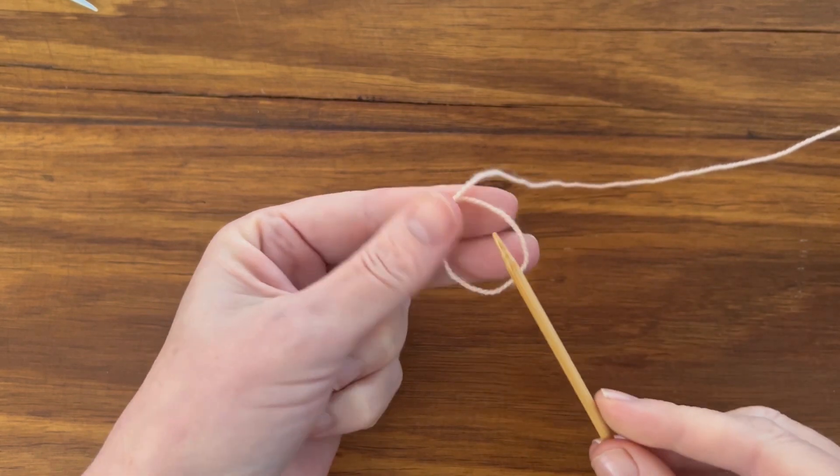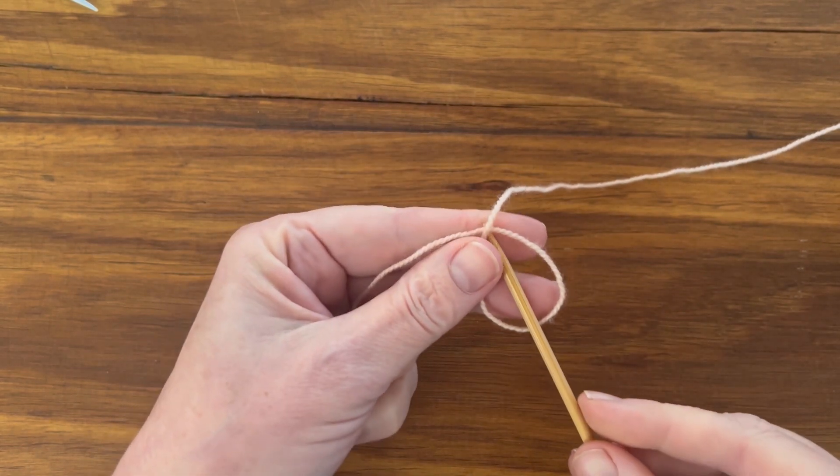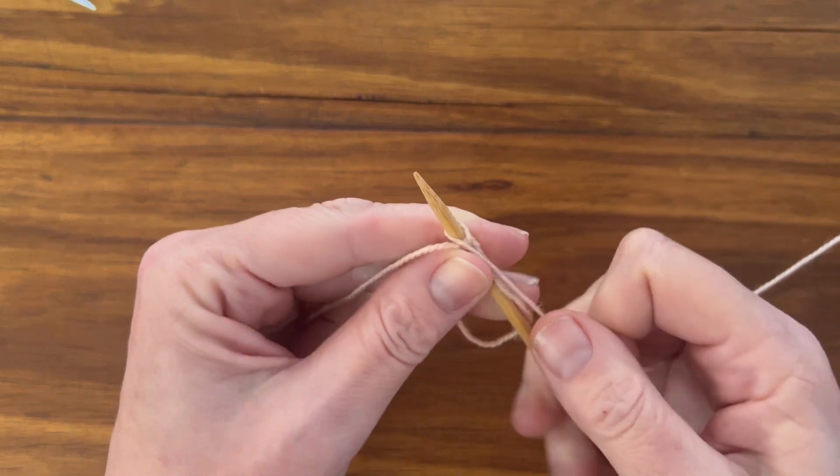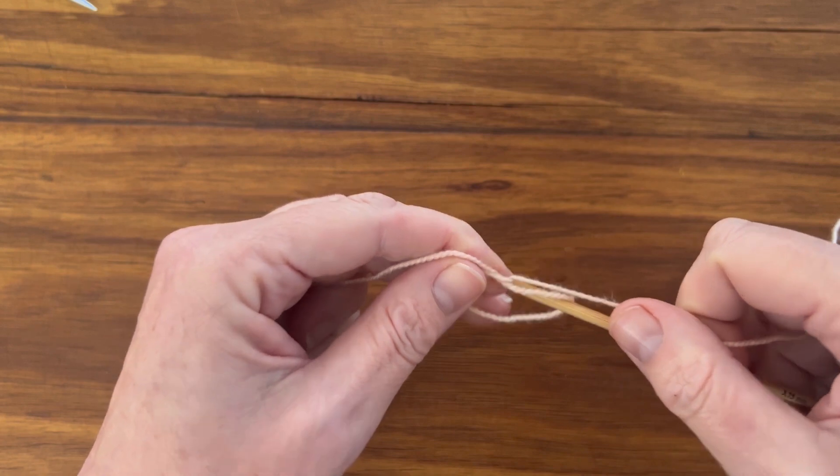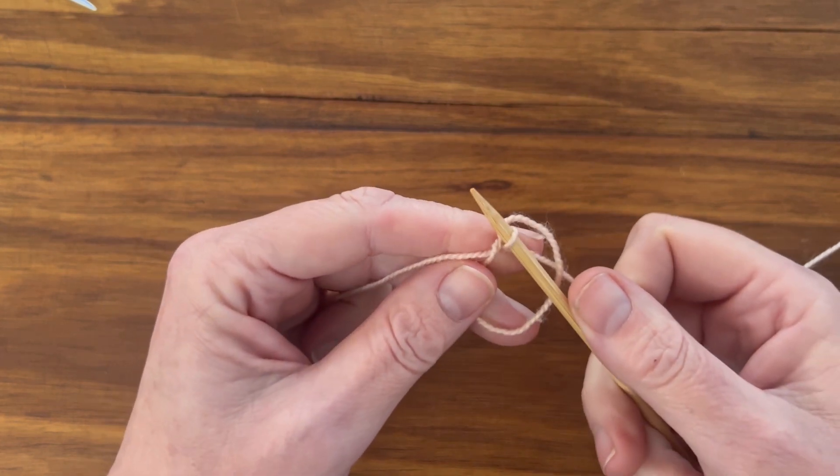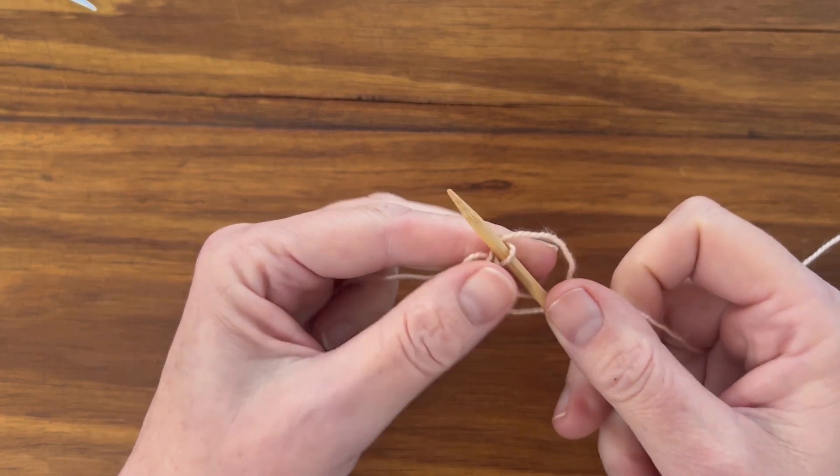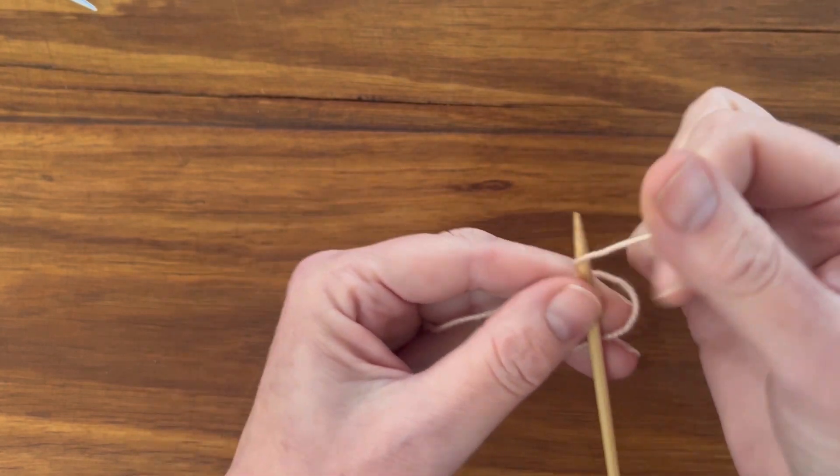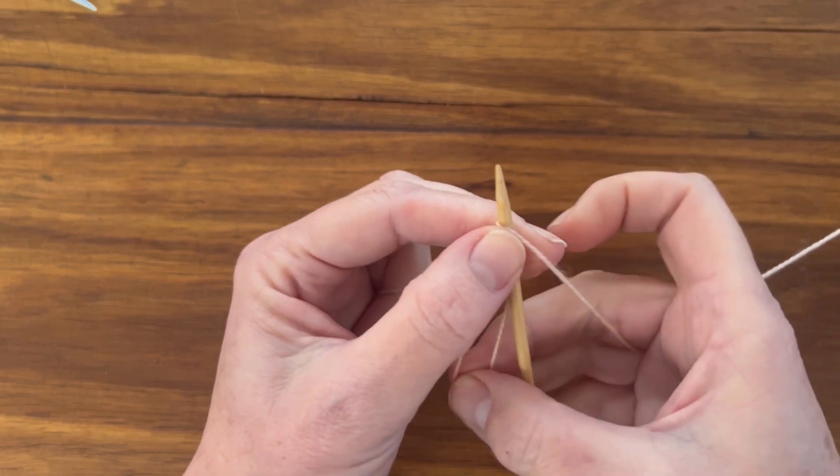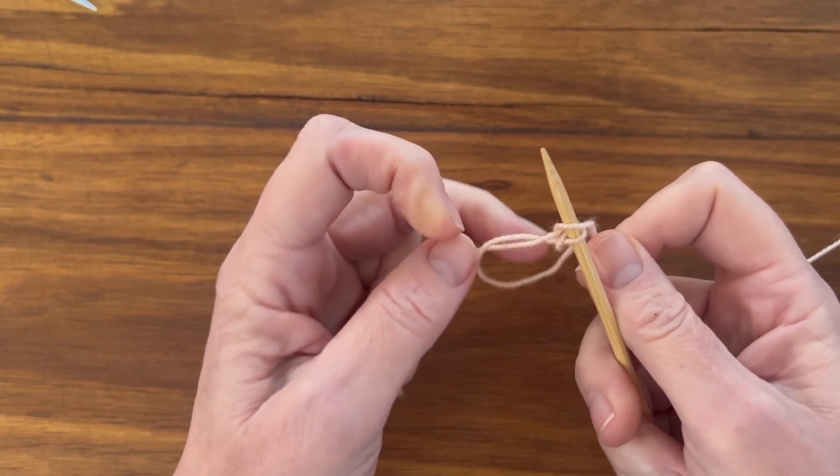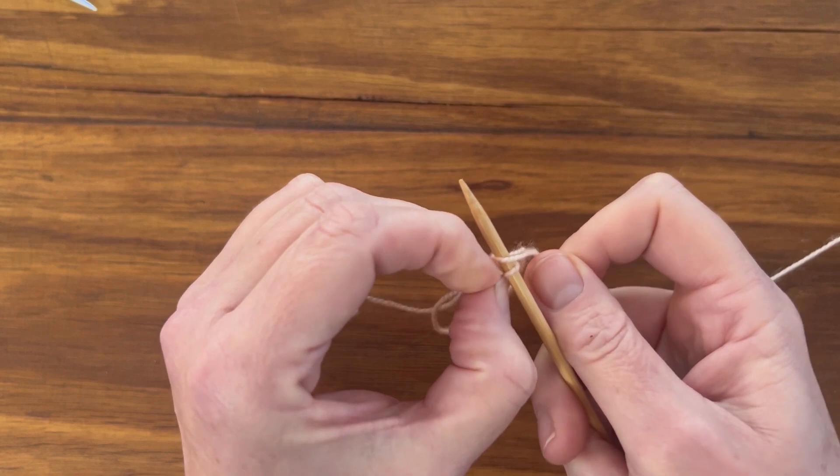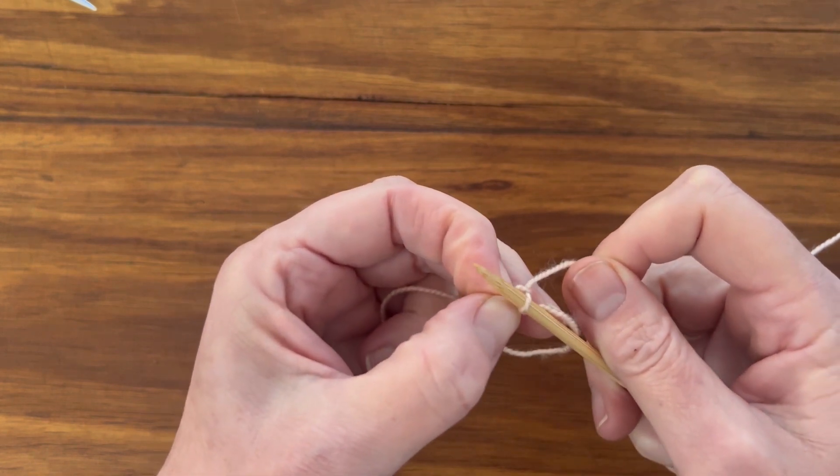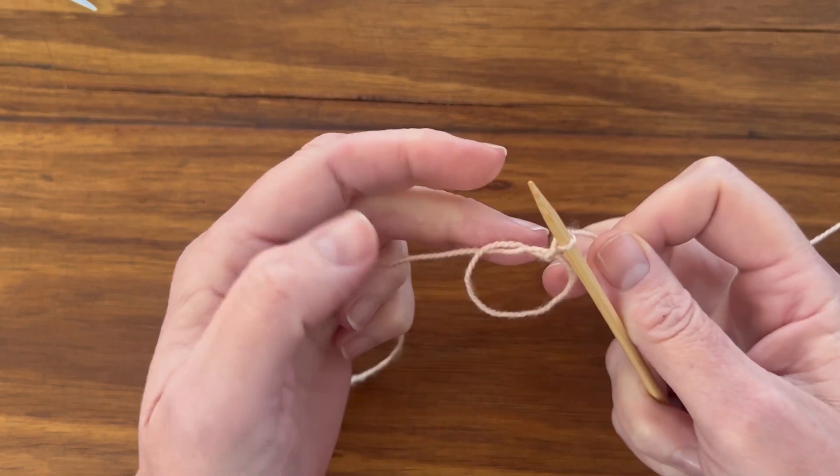Then take your needle insert it through the loop behind and work a yarn over. Pull that yarn over through the loop and you have one loop on the needle. Work a second yarn over. So now there's two loops on the needle and you're going to use your fingers just to pull that first loop over the second and that's one stitch.